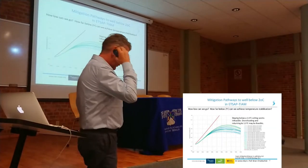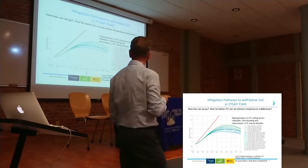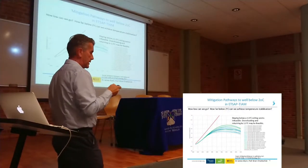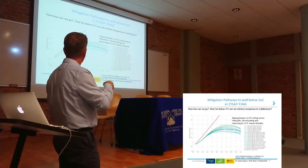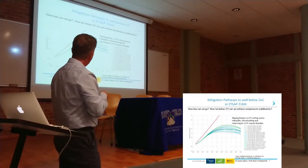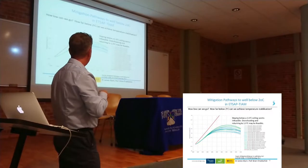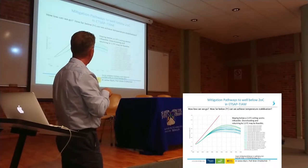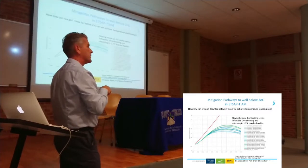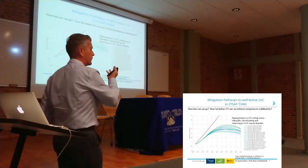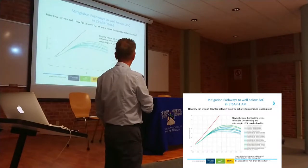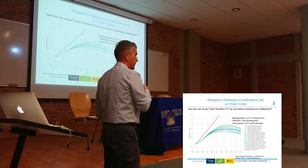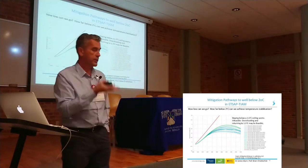A lot of work has been published using ETSAP-TIAM. One example done recently looks at how far below two degrees we can achieve temperature stabilization. The reference scenario goes up to plus six degrees. According to this analysis, staying below 1.5 degrees over the whole time horizon to 2100 seems quite difficult. There seems to be a trend to overshoot and then come back down after 1.5 degrees — an indication that maybe we are already too late and must start working now, so that the temperature increase overshoots but eventually goes back down.